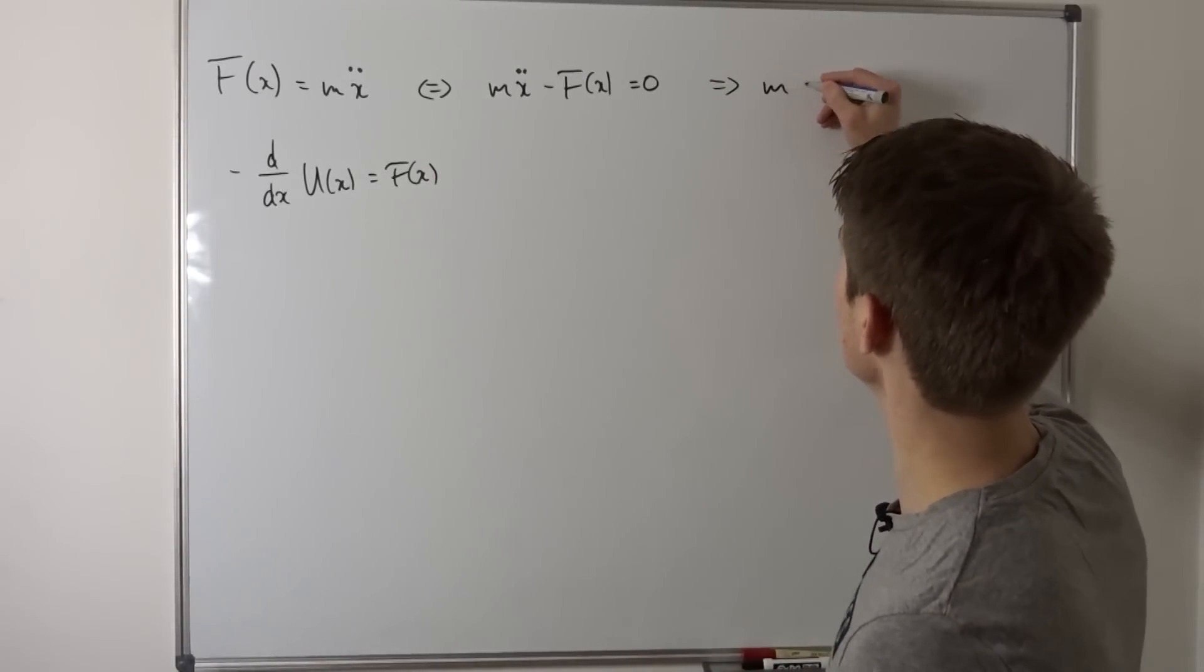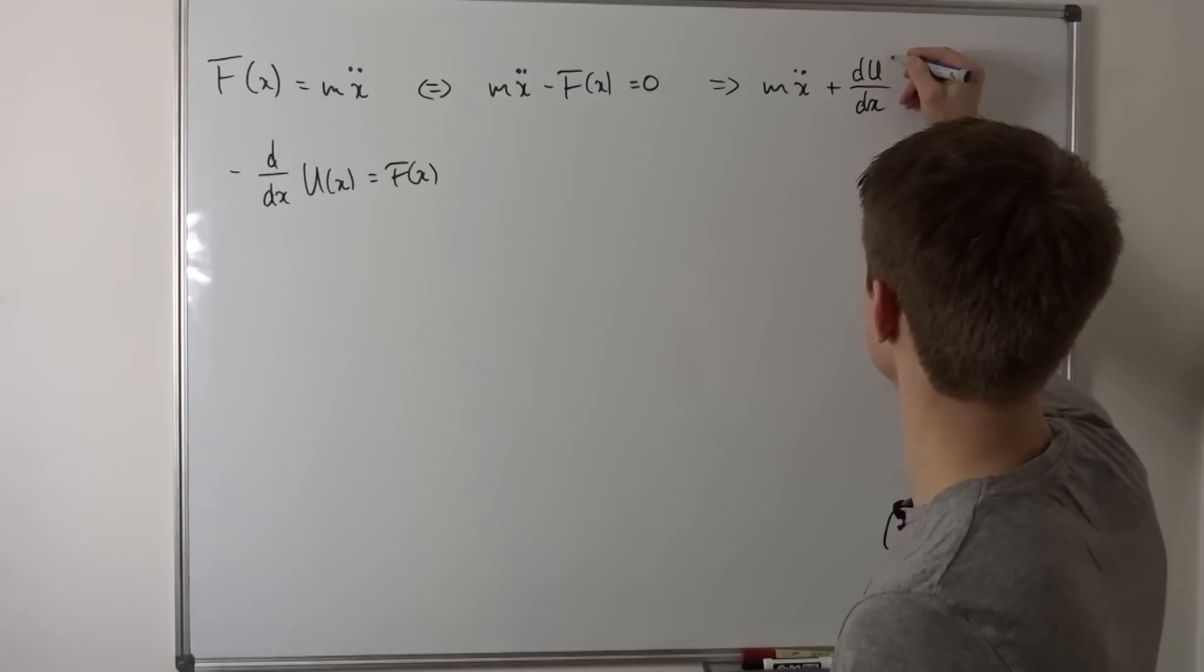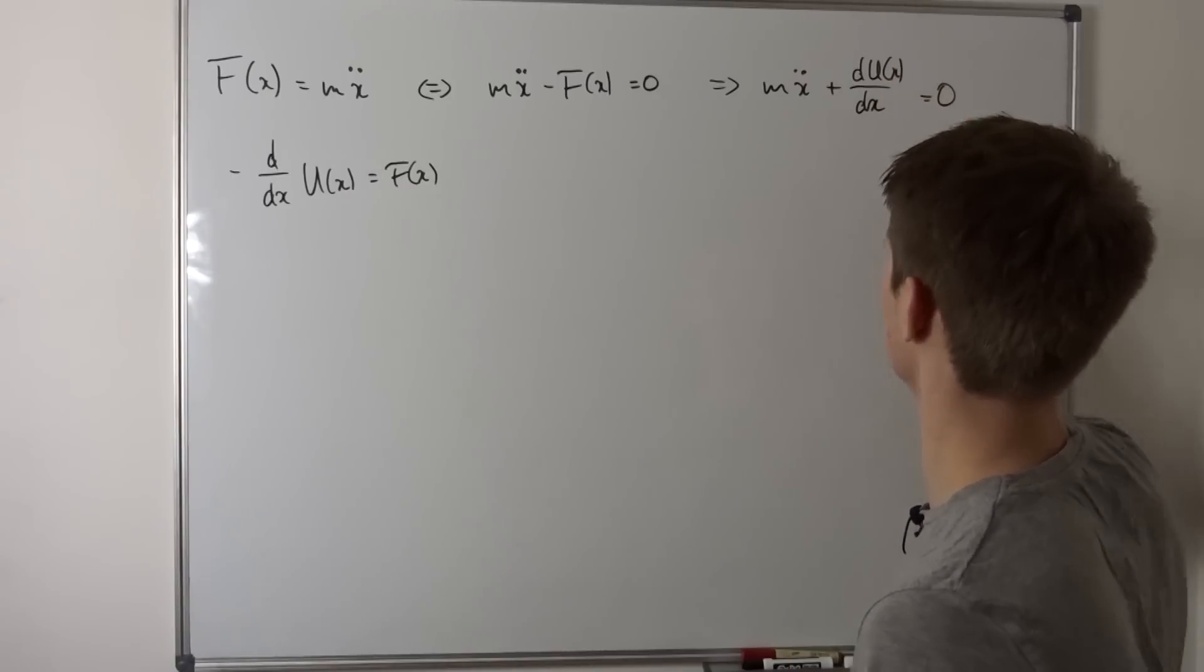So now we have m x double dot positive du dx and the u is in terms of x is now going to be equal to zero.